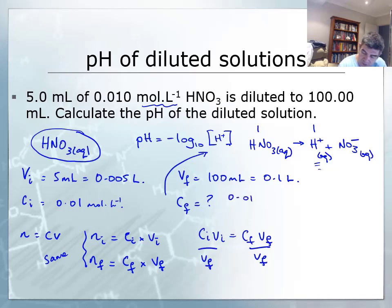That's 0.01 multiplied by 0.005, divided by 0.1. On the calculator: 0.01 × 0.005 ÷ 0.1 gives me 5 × 10⁻⁴ moles per liter.